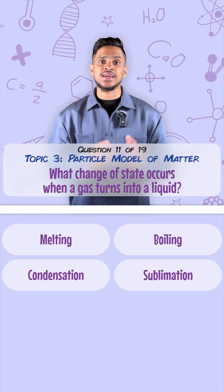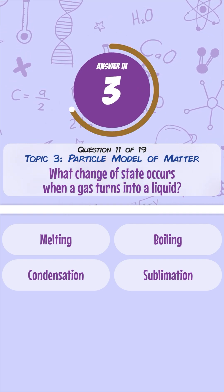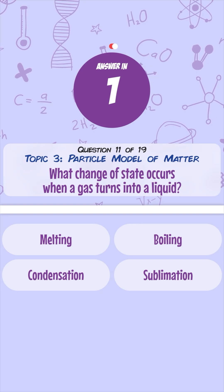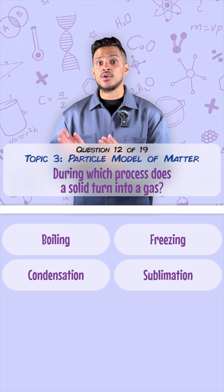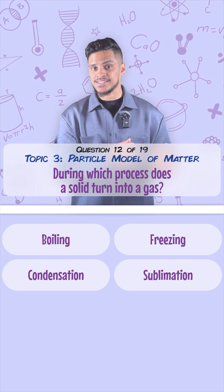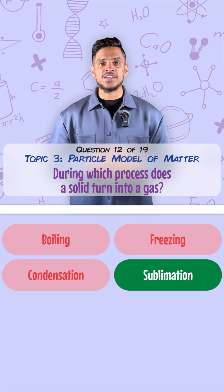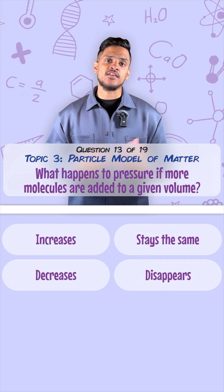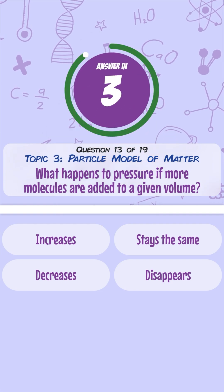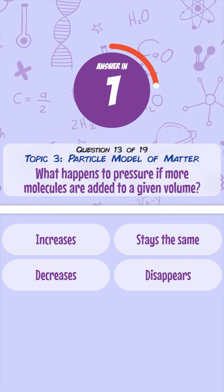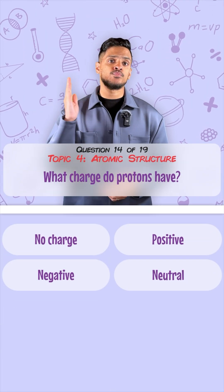What change of state occurs when a gas turns into a liquid? That's called condensation. What's the process called when a solid turns into a gas? That's called sublimation. What happens to pressure if more molecules are added in a given volume? The pressure increases.